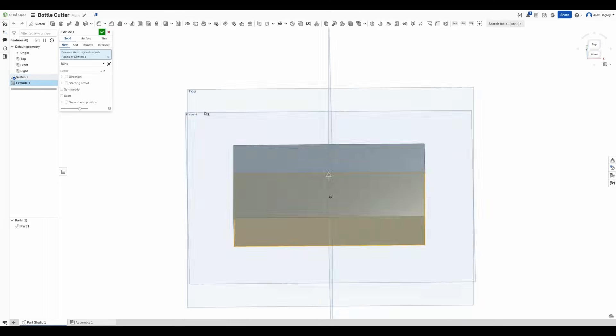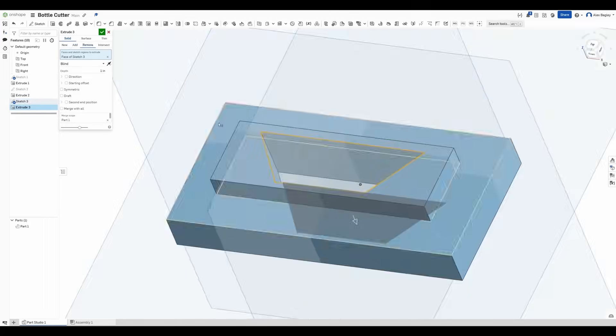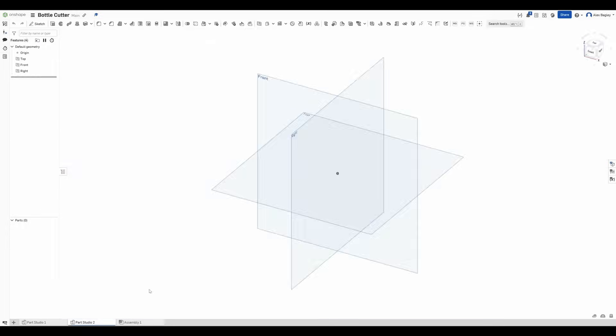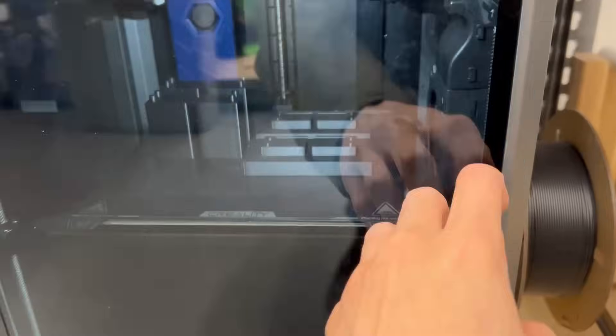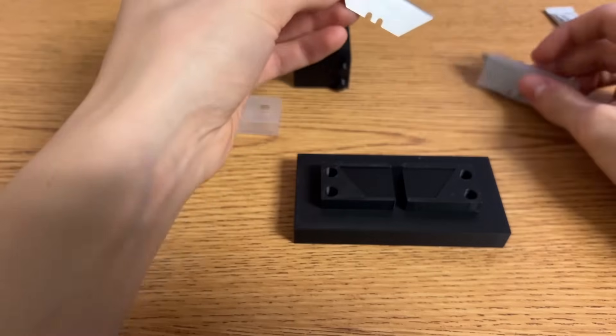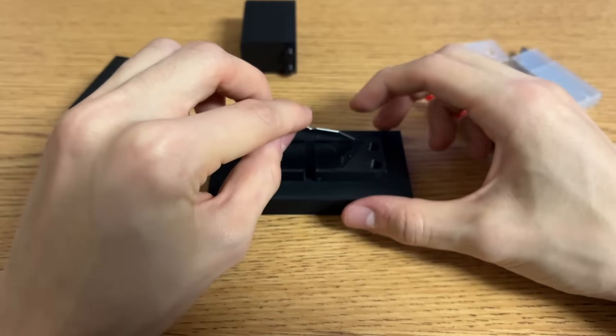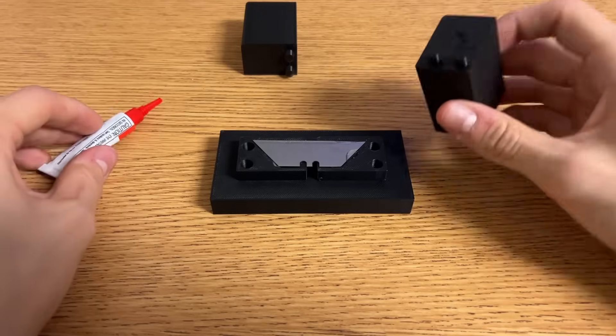So in Onshape, I designed this little razor holder, which turns PET bottles into long ribbons of PET plastic. So after it was done printing, I assembled the razor into the bottle cutter with superglue, and then put the rest of it together with some more superglue, kind of like this.